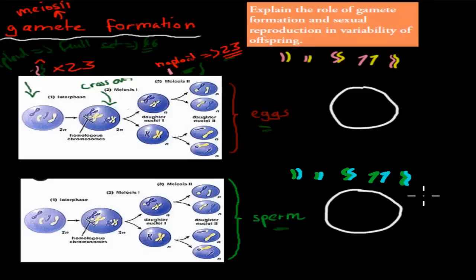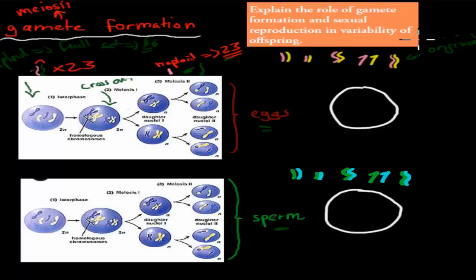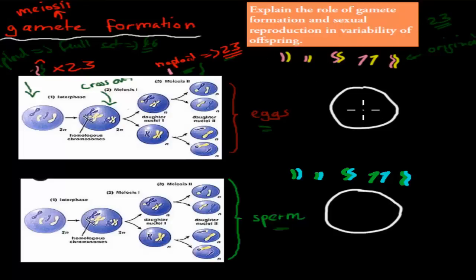Let me randomly demonstrate producing an egg and a sperm cell from our original cell. These are the chromosomes of our original cell. We have 23 homologous pairs, but I'll simplify and just show five pairs — you can imagine it happening for all 23. This is the original arrangement. Now, for each pair, you randomly pick one chromosome with a 50% chance.